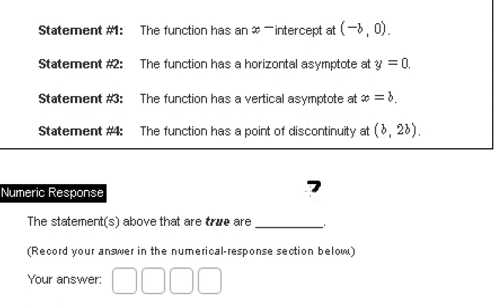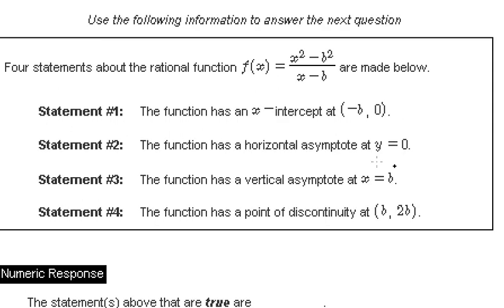Now we need to analyze the first one. The function has an x-intercept, that means y equals zero. But if we look carefully, x squared minus b squared, this is about identities.